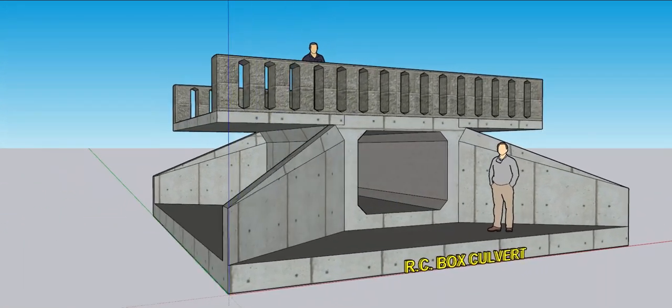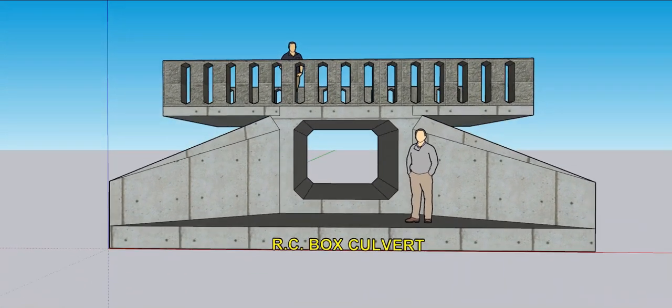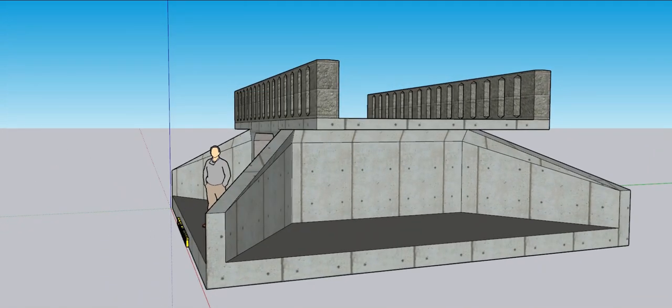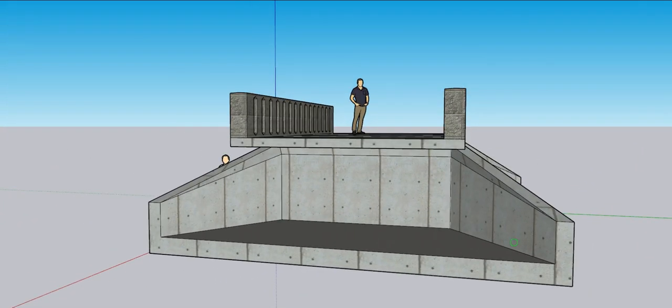Up to a span of four meters, reinforced concrete rigid frame box culverts with square or rectangular apertures are employed. Usually, the height is no more than three meters.